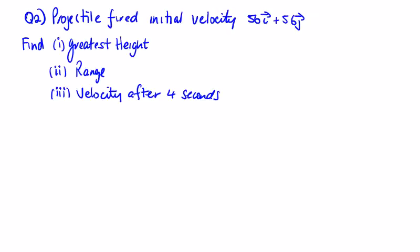Question 2: the projectile is fired with initial velocity 56i + 56j meters per second. Find its greatest height, its range, and — new to this question — the velocity after four seconds.